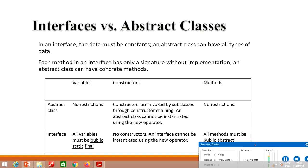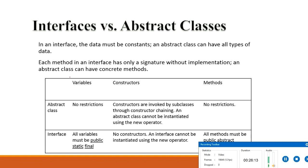The difference between interface and abstract class: In an interface, data must be constant, whereas an abstract class can have all types of data. Each method in an interface has only a signature — just a header, no implementation — whereas an abstract class can have both abstract and concrete methods. Now let's discuss in detail regarding variables, constructors, and methods.